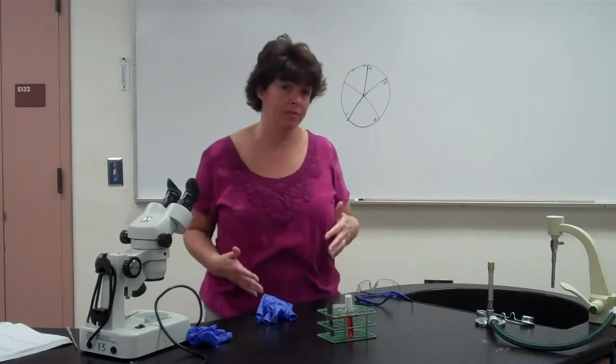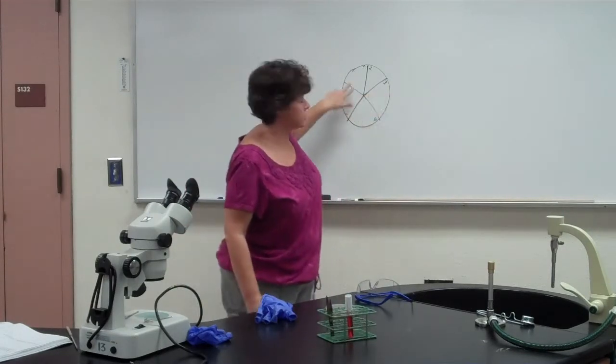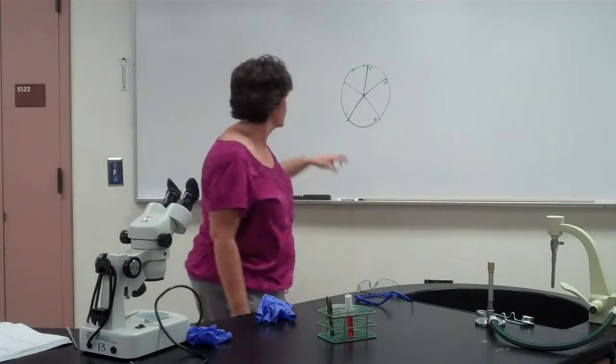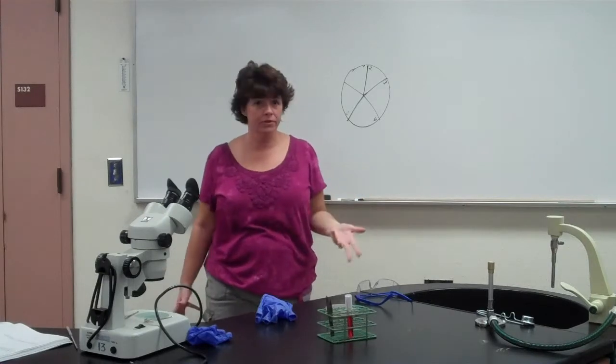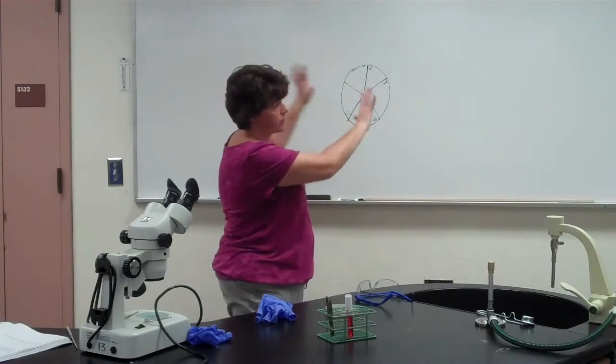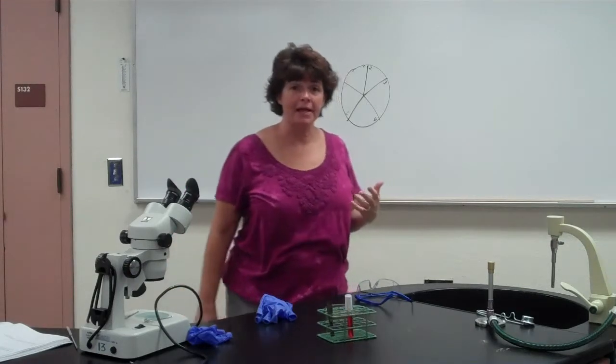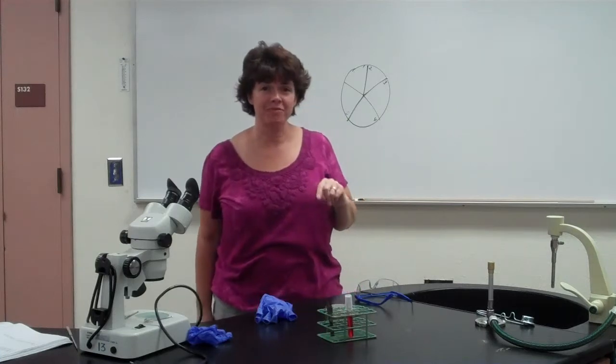When we read our plates the next class period, we should be able to see—you'll look at your plates and look for the amount of red growth that you have. The amount of red growth that you have, and you're going to determine if it's a lot of growth or a little growth. Everybody's going to write their results on the board, and we should actually be able as a class to trace it back to the one person that was infected when we started.